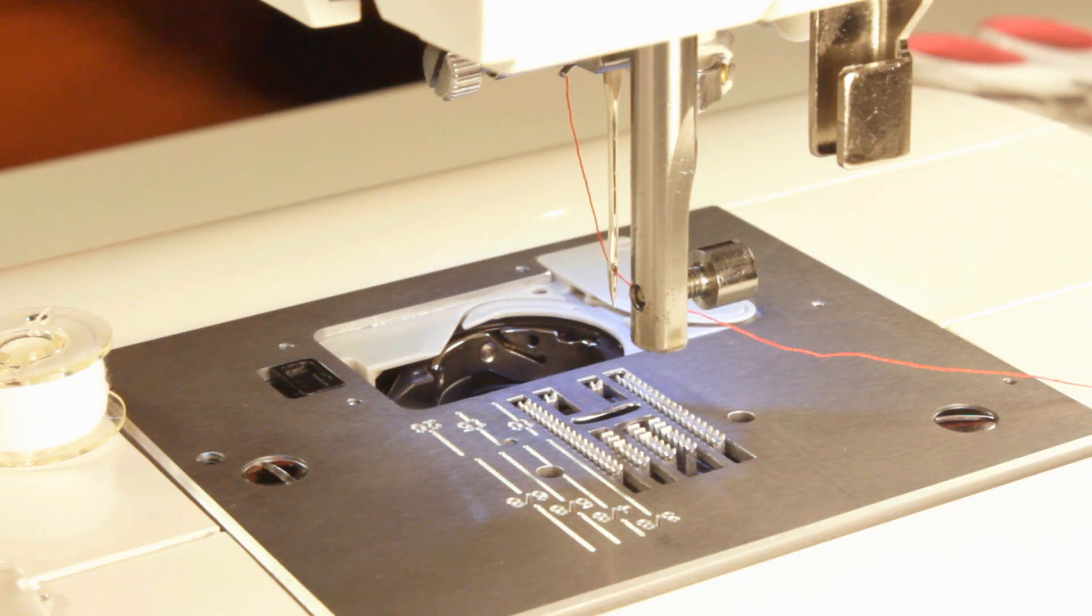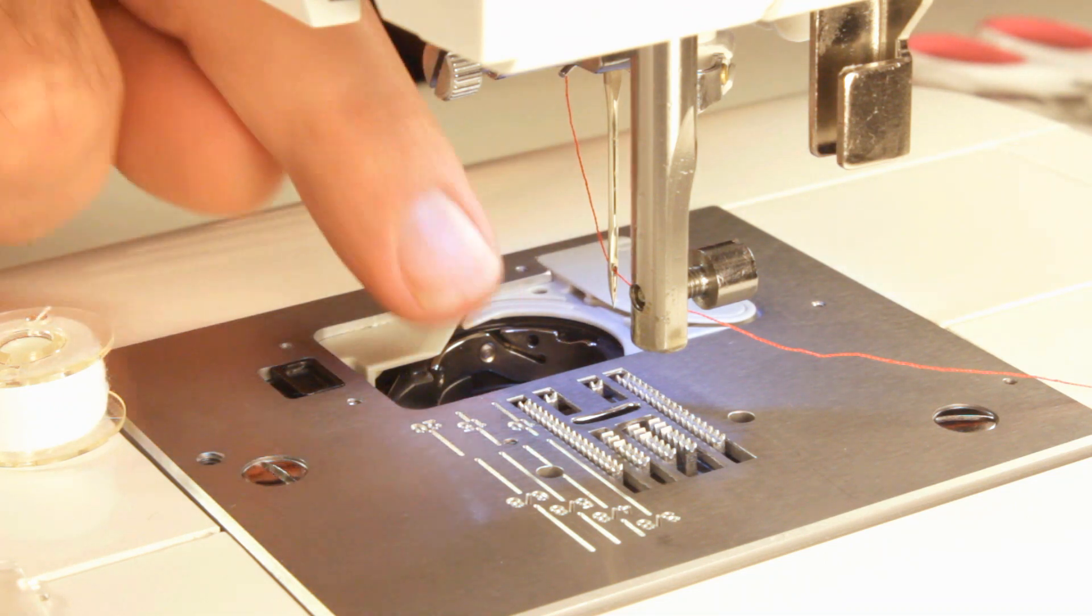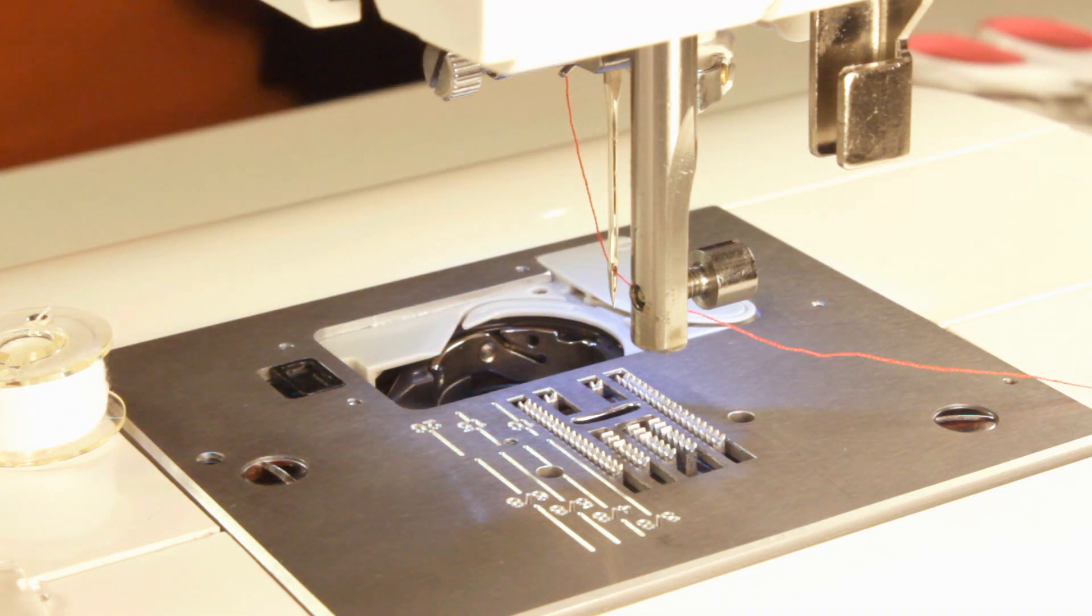I wanted to go through a few issues that you may have when you're trying to thread these top-loading bobbins. In this case, I'm using the Singer Quantum Stylist Touch, model 9985, which as of this date, in January of 2014, is a new machine. It's recently been released.